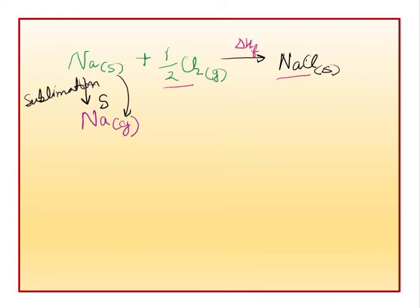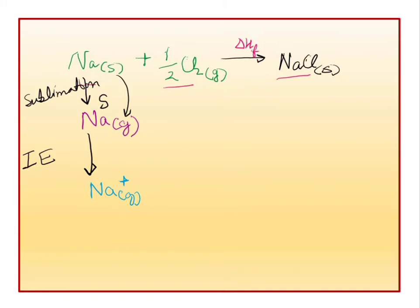Doosra step — is sodium gaseous atom ko agar hum sodium gaseous cation mein convert karte hai, toh aap jante hai is conversion ko hum kya kehte hai? Ionization. Gaseous atom ko gaseous cation mein agar hum badalte hai, toh yahaan par energy ki zarurat hoti hai, aur us energy ko hum kehte hai ionization energy. Toh ionization energy ki zarurat hai yahaan par. Ab hum ne yahaan par sodium solid ko sodium cation mein convert kar diya — iske liye sublimation energy aur ionization energy deni padi.